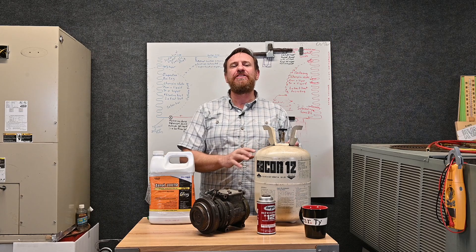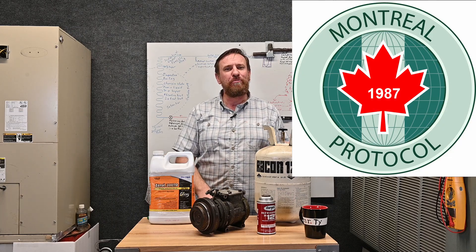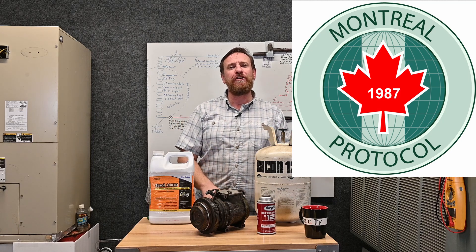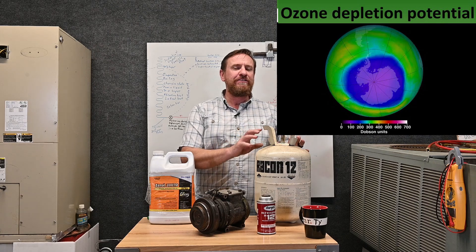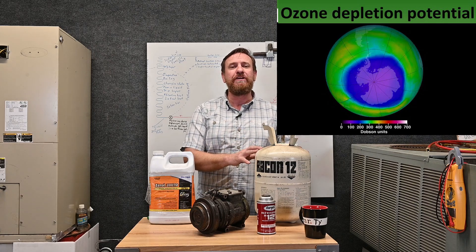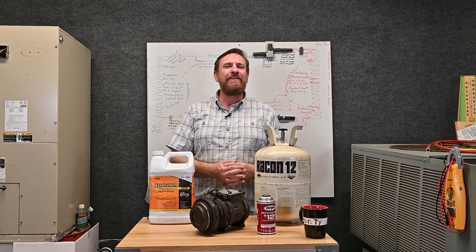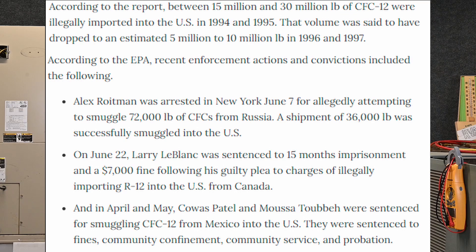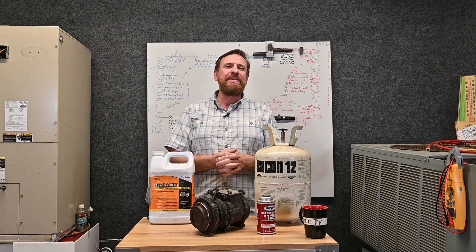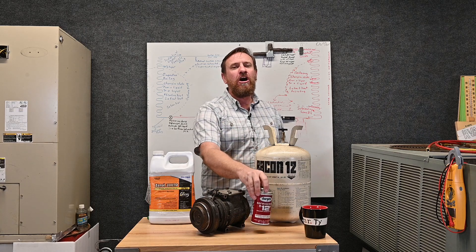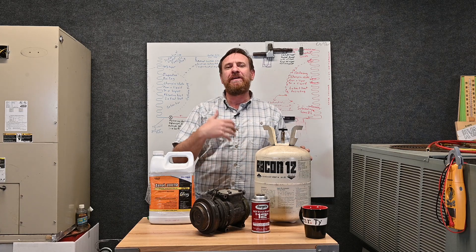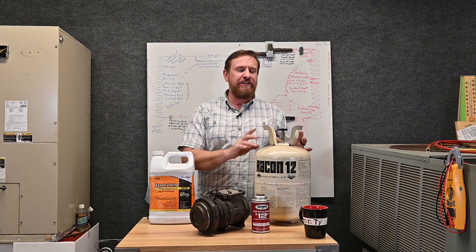So in 1987, 137 countries came together and signed the Montreal Protocol. They agreed to do away with CFC refrigerants first because they were the most harmful — ozone depleting, ODP, ozone depletion potential. That refrigerant was the first one to go, and we started doing away with it around 1993. Smuggling this refrigerant from Mexico into the U.S. was bigger than drug smuggling at the time — people were actually going to jail for smuggling refrigerant across the border because they were making so much money. It was a pretty quick turnaround from 1987 to around 1993.